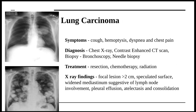Lung carcinoma symptoms include cough, hemoptysis, dyspnea, and chest pain. Diagnosis is done by chest x-ray, CT with contrast, and biopsy. The type of biopsy — bronchoscopy or needle biopsy — is determined by the location of the carcinoma. Treatment includes resection, chemotherapy, and radiation. X-ray findings show local lesions greater than two centimeters with a spiculated surface, as seen in the first diagram. If lymph nodes are involved, the mediastinum would be wide, and it can be accompanied by pleural effusion and consolidation.